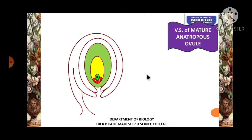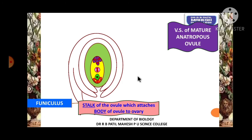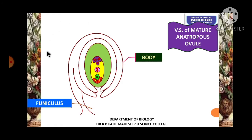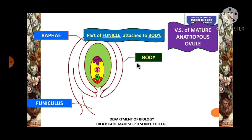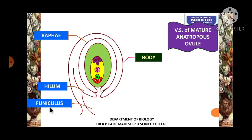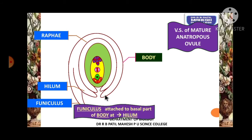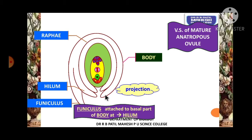The embryo sac will be made up of cells, and we are going to understand what these cells are and how many. The stalk of the ovule is called funicle. Part of the funicle attached to the body of the ovule is called raphe. The part where the funicle attaches to the ovule is called hilum. The funicle attached at the hilum gives support and also acts as a projection helping in the seed germination process.